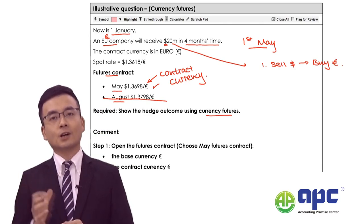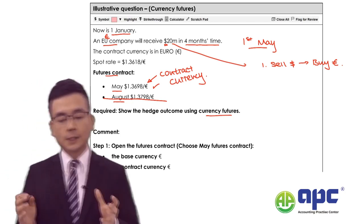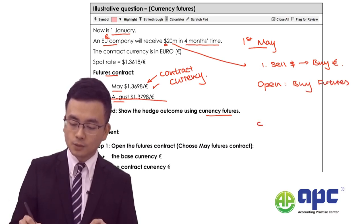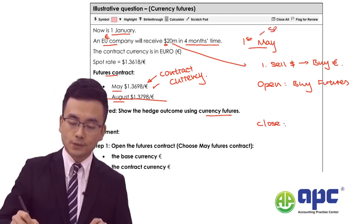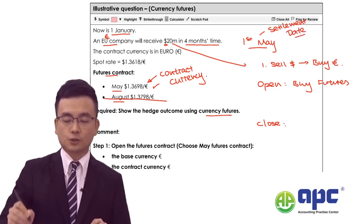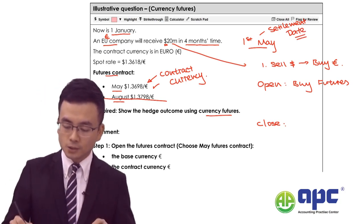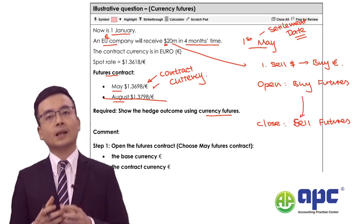Buy Euro — because Euro is our contract currency. So what we need to think about is that we need to open the deal to buy futures, and later on we would like to close the deal on the settlement date. The settlement date is when we receive money from the foreign customer on 1st May. Closing out the deal means that we would like to sell futures — because we've bought it already, we do it in the opposite way, which means to sell it later on.